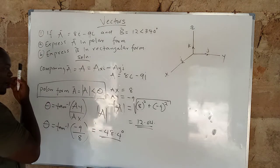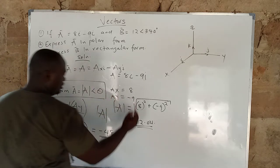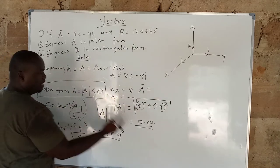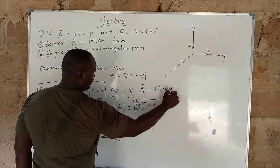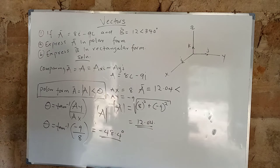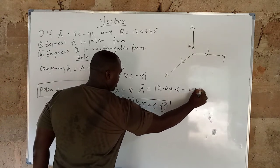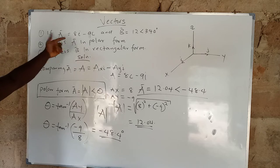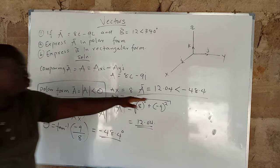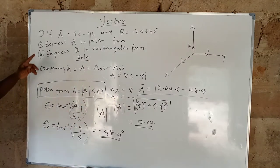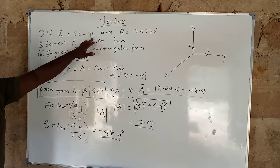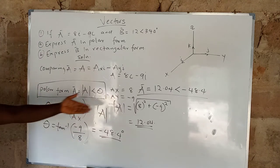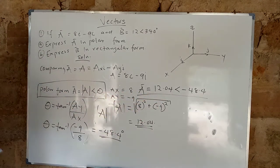All you have to do is substitute into the polar form formula. From the formula, the vector of A equals the magnitude at the angle theta. So the vector of A equals 12.04 at the angle of minus 48.4 degrees. We have succeeded in converting rectangular to polar form.